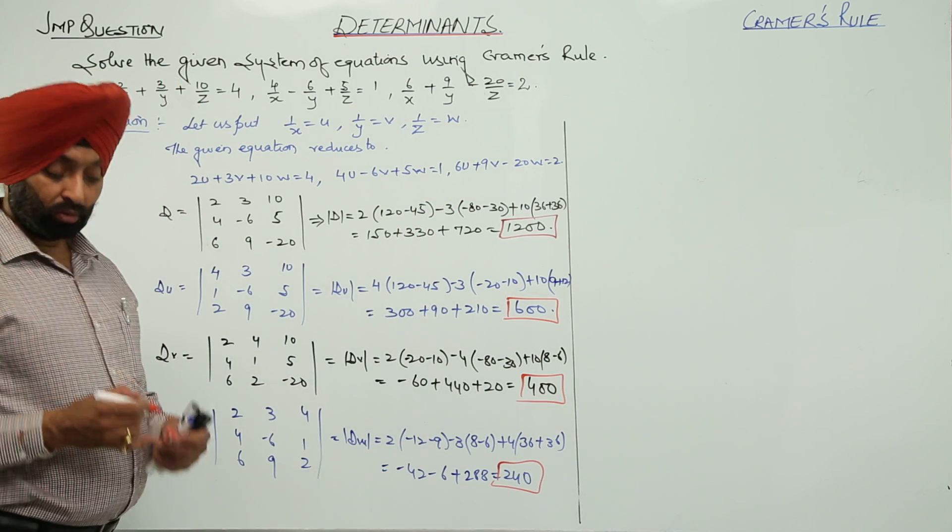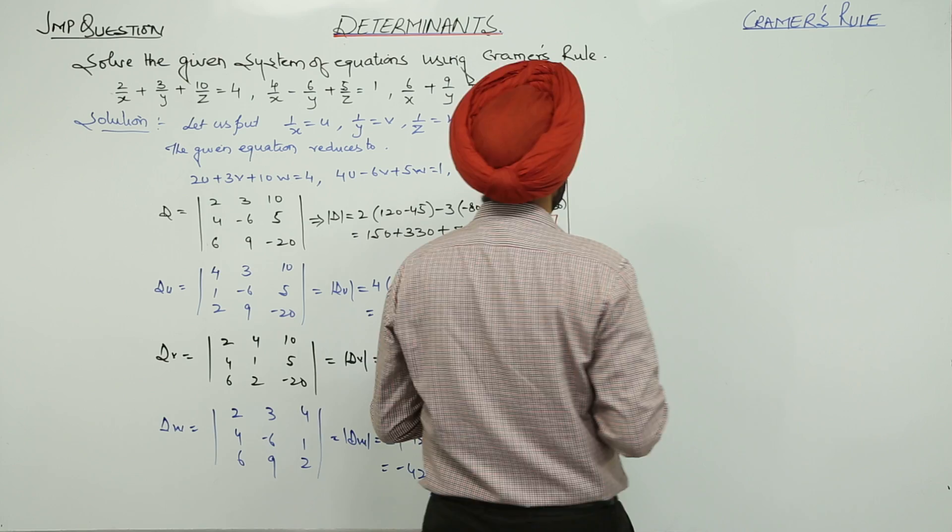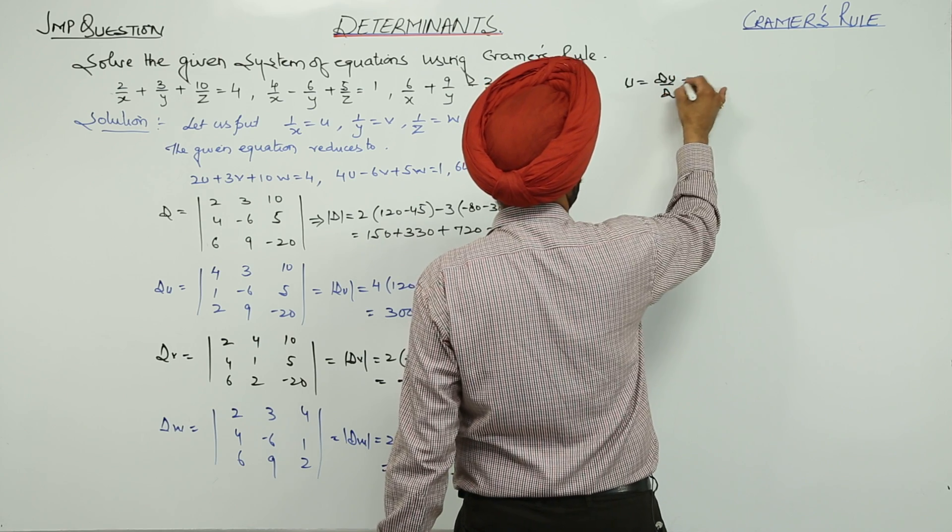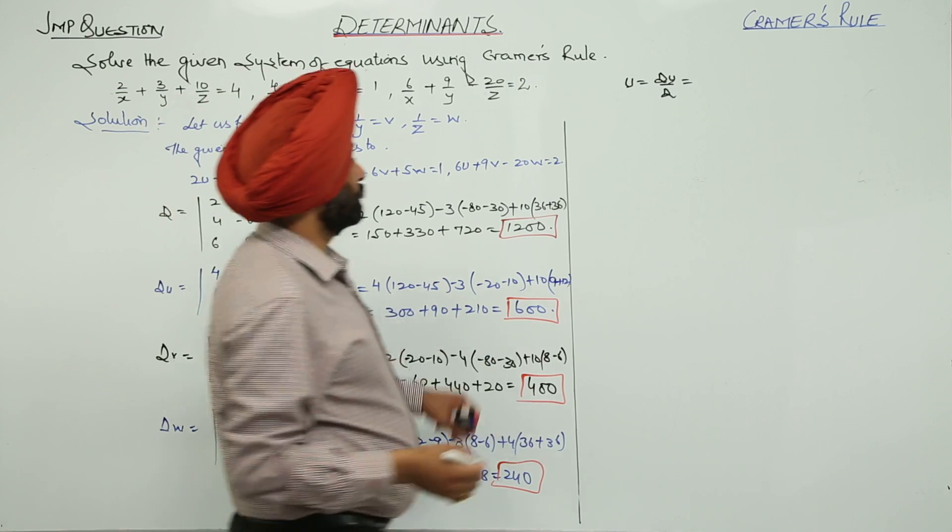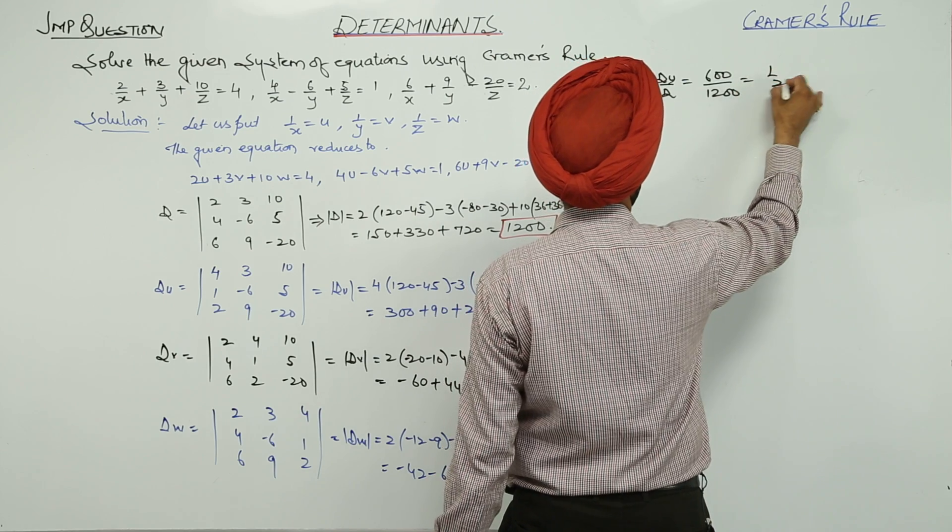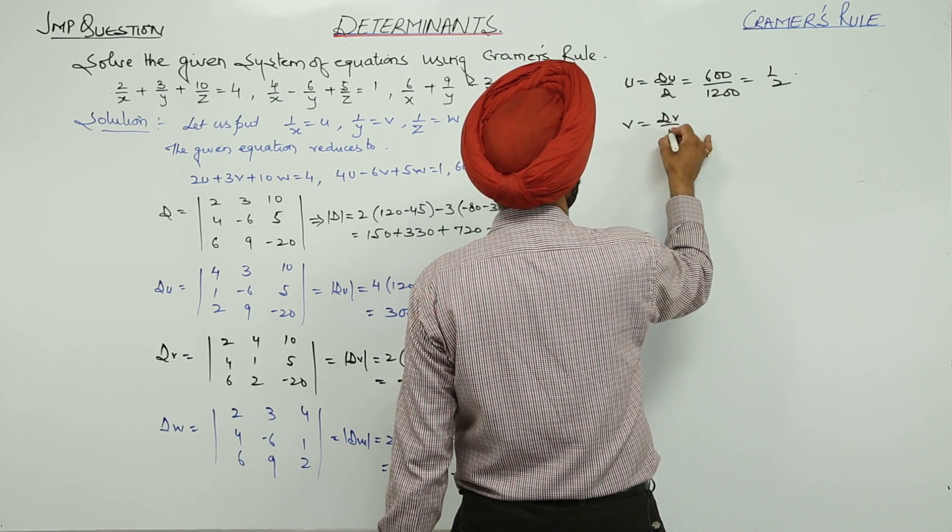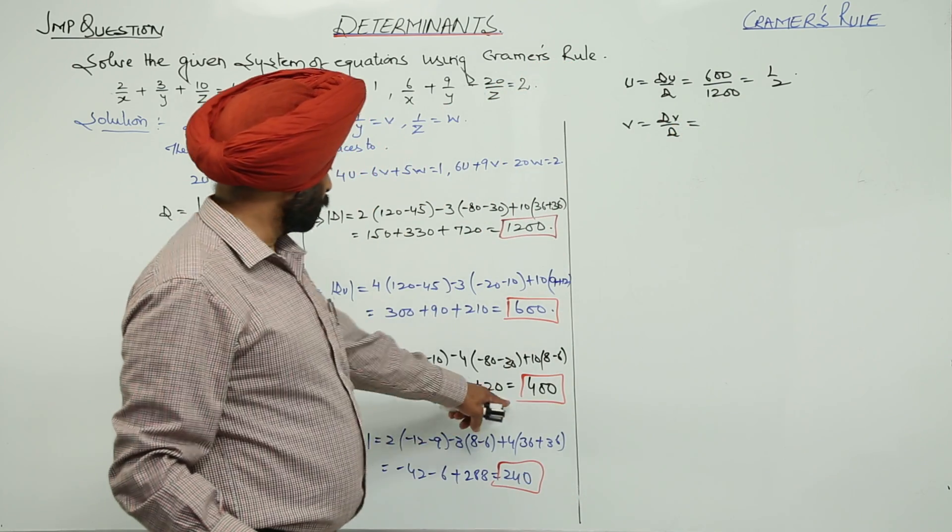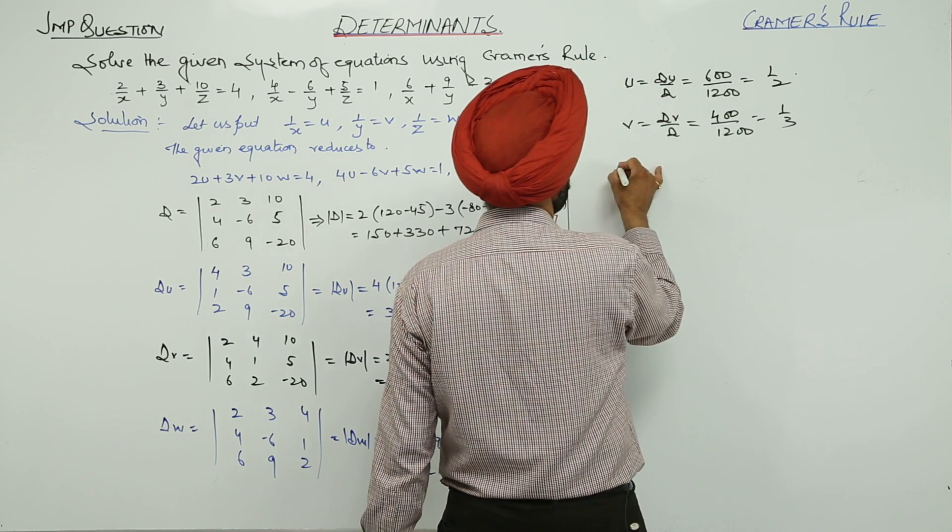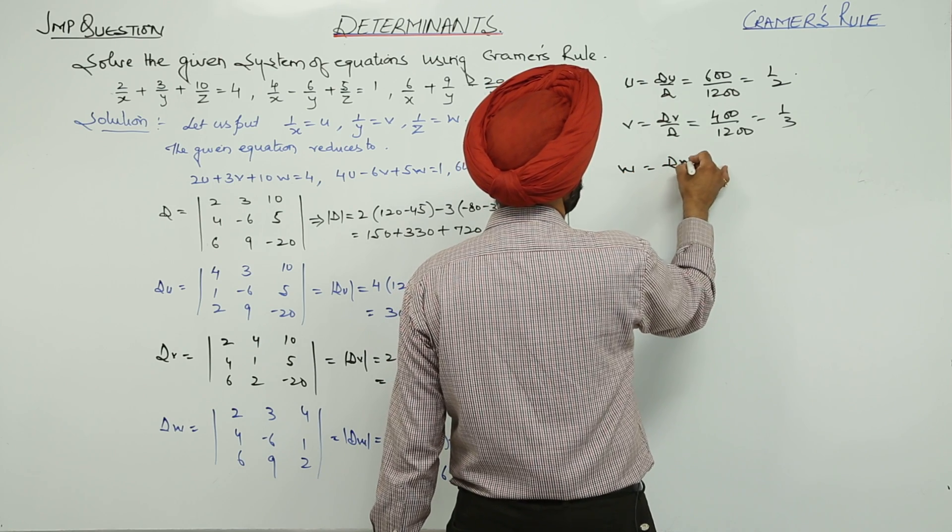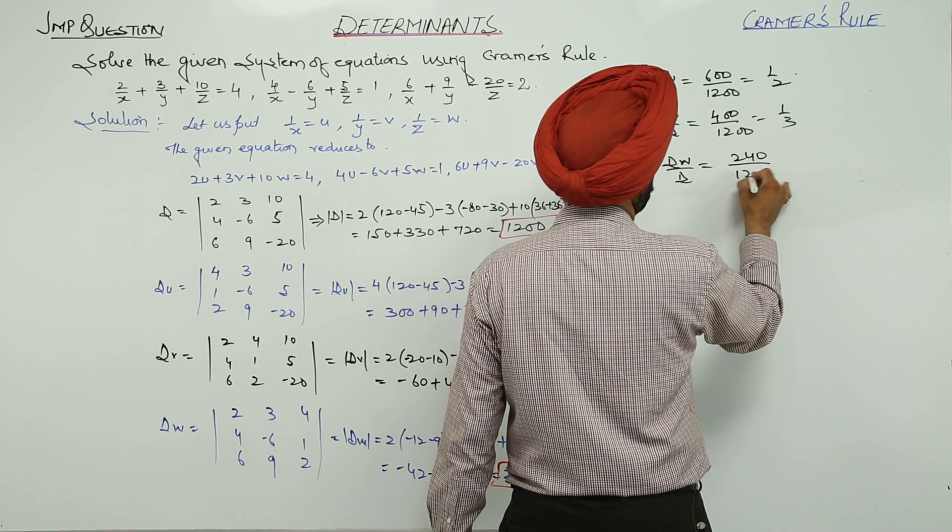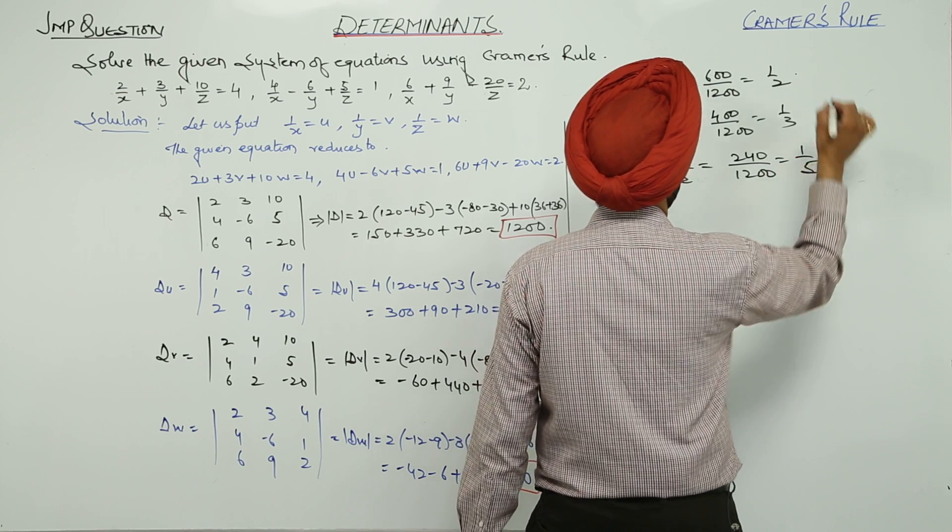So we are getting all the 4 terms. Now, u is equal to du upon d. Du is 600, 600 upon 1200. This is equal to 1 by 2. V is equal to dv by d. V is 400, 400 upon 1200, 1 upon 3. And w is dw upon d. That is 240, 240 upon 1200. That is 1 upon 5.